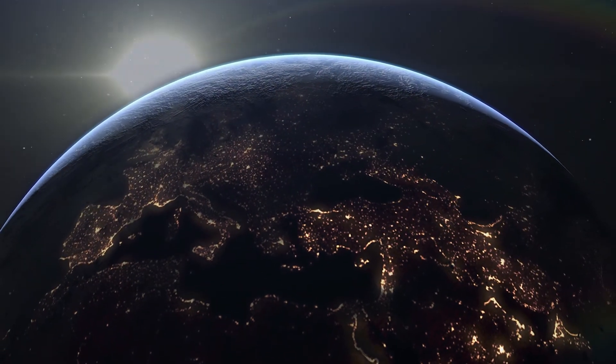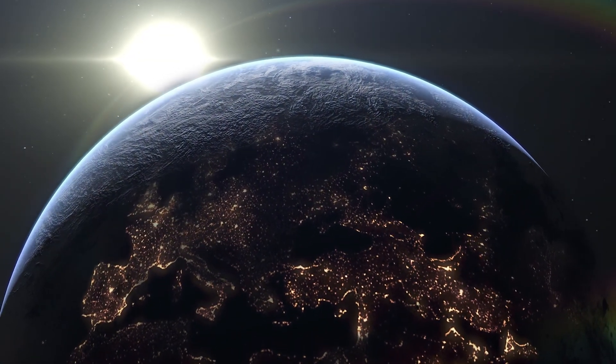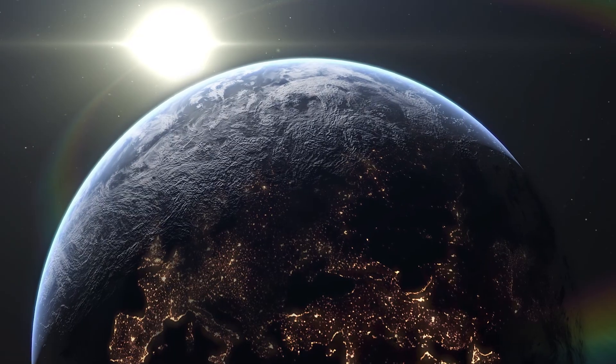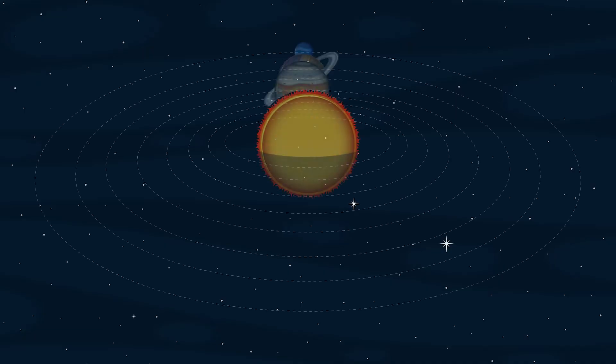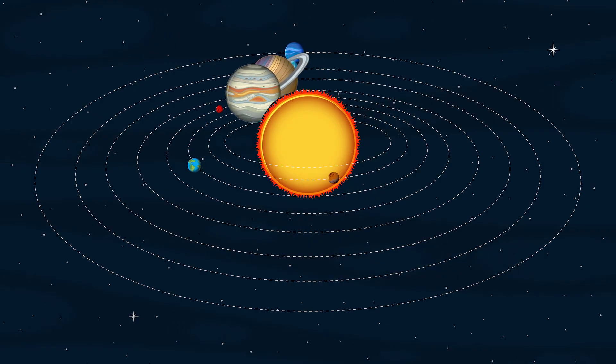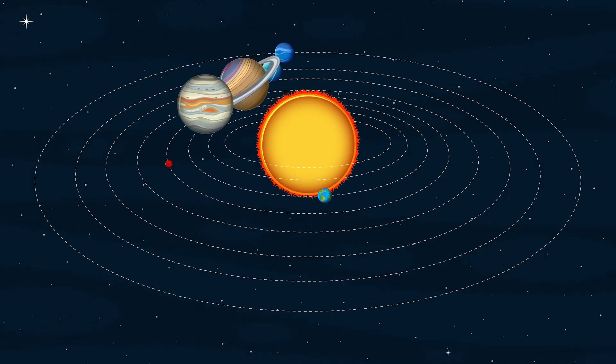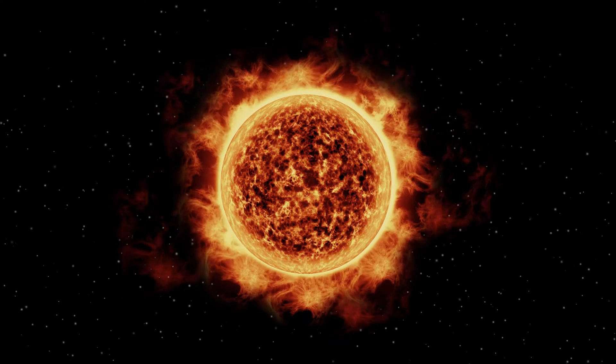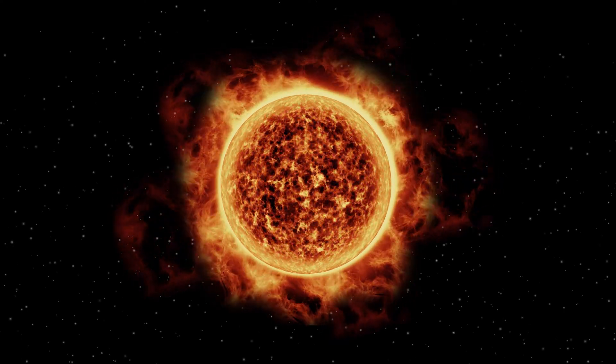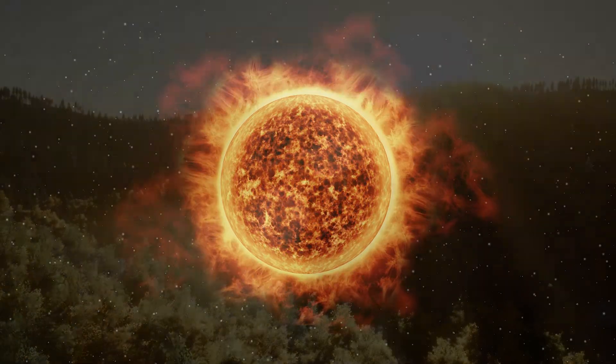Yet another element plays a critical role in making Earth suitable for life: the Sun. This star's immense mass and gravitational pull keeps the planets in their orbits around it. It is also a colossal engine of energy, radiating light and heat across vast distances.